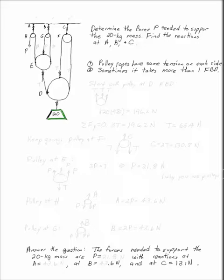First thing to notice: pulley ropes, as long as they're frictionless, have the same tension on each side. So if this one is P pulling down, then the other side of pulley H is P, the other side of pulley E is P, and the other side of pulley G is P.